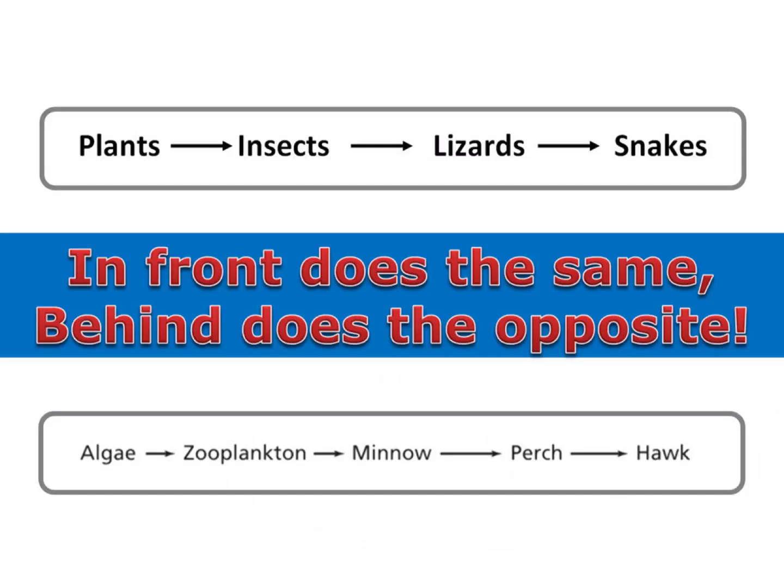In this first food chain, let's say something caused the lizard population to decline. In front of the lizards are the snakes, further down the food chain. They would also decline because they do the same — if there were fewer lizards, the snakes would have less food, causing their population to decline.